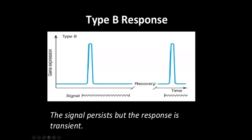In type A response, the presence of the inducer is responsible for enhancing the expression. If you remove the inducer it will not be there. But in type B response it is different — the signal is present but the response is only transient. This phenomenon of response, sensitization, and recovery characterizes the action of many pharmacologic agents, but it is also a feature of many naturally occurring processes. This type of response commonly occurs during development of an organism when only the transient appearance of a specific gene product is required, although the signal is present.